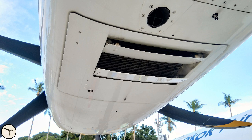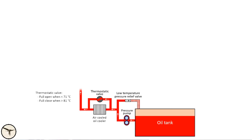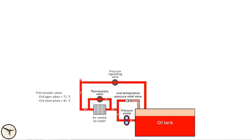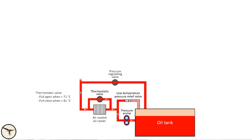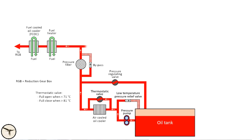The airflow through the oil cooler is controlled by one or two flaps operated by a thermal actuator. They are fully closed when oil temperature is below 71°C and start to open when temperature increases. There is also a thermostatic bypass valve that is fully open below 71°C and fully closed above 81°C. A pressure regulating valve maintains oil pressure at around 60 psi, and excess oil is returned to the tank. Oil then flows through a filter with a bypass valve that opens if the filter is clogged. From here the oil continues to the propeller reduction gearbox via the fuel heater and oil-cooled oil cooler, or to the gas turbine.